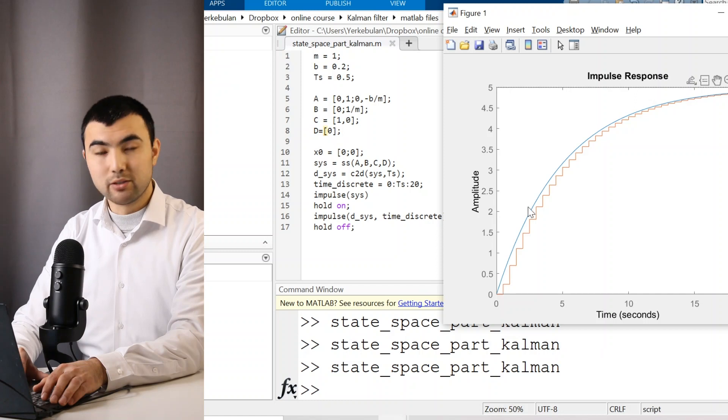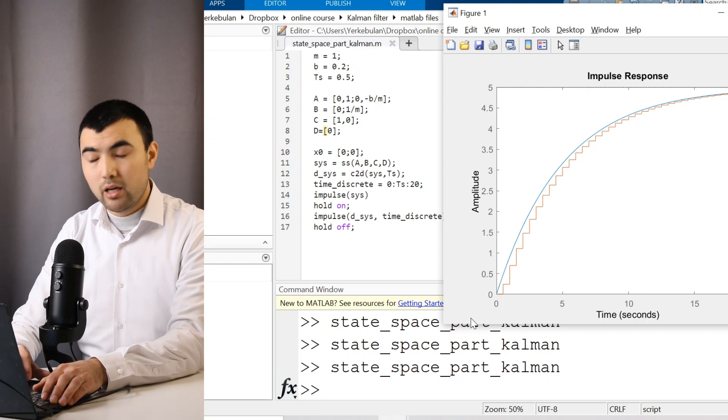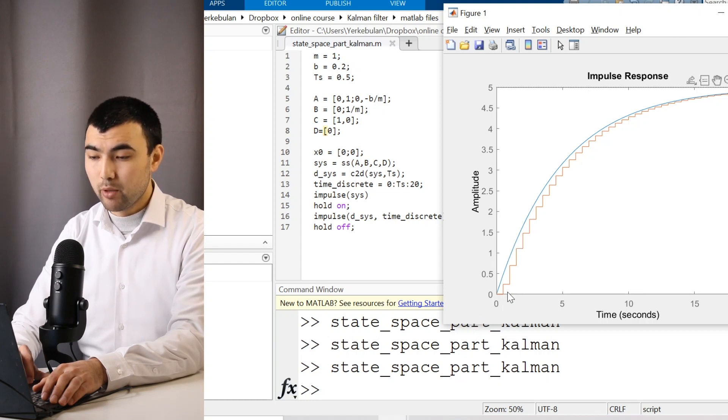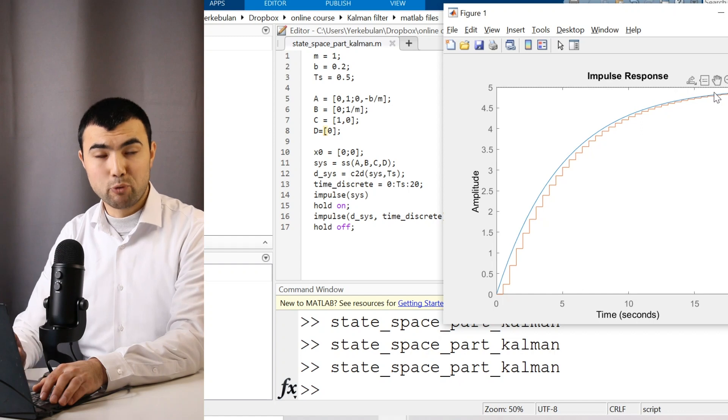So here we have the continuous, the outcome of the continuous state-space representation. And we have the discrete form. So the discrete form follows the continuous form pretty well.